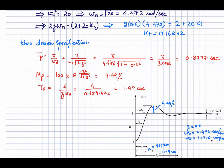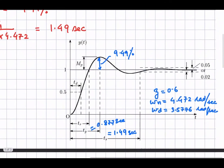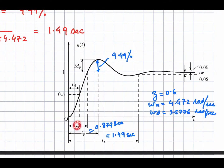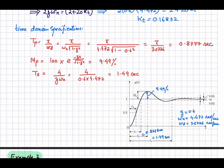The settling time for the 2% criterion is given by 4/(ζωn). With ζ = 0.6 and ωn = 4.472, that is 1.49 seconds. The response diagram shows the rise time and peak time of 0.877 seconds, settling time of 1.49 seconds, overshoot of 9.49%, zeta of 0.6, natural frequency of 4.472, and damped frequency of 3.5776 radians per second.